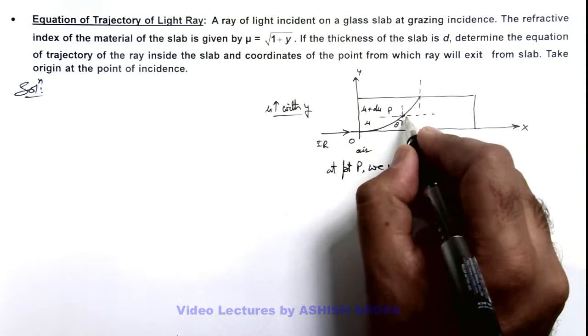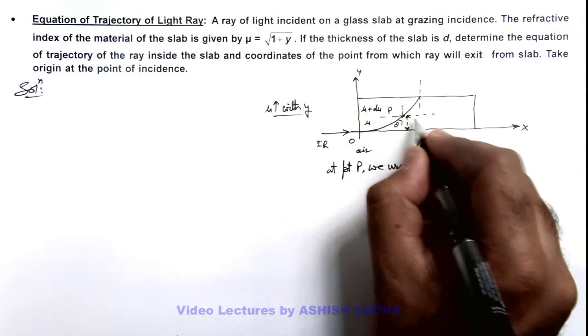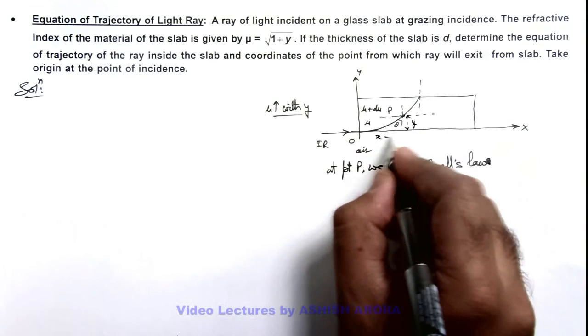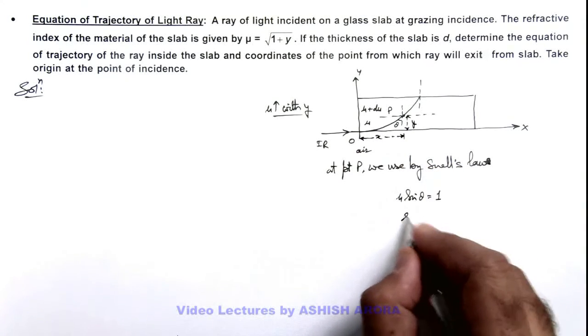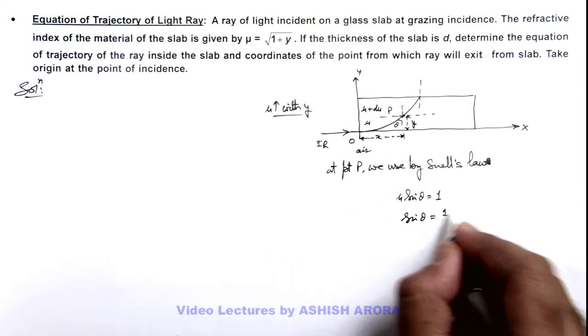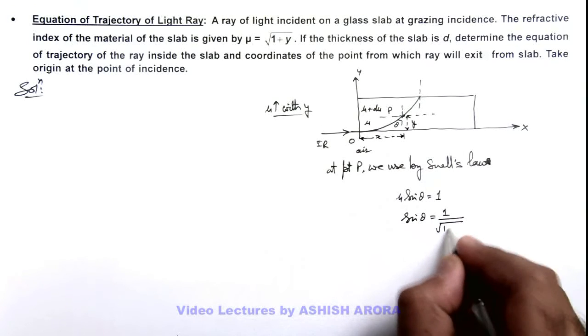And if this point is having a coordinate (x, y), then this is y and this is x. Then here we can write the value of sin θ = 1/μ, which is 1/√(1 + y).